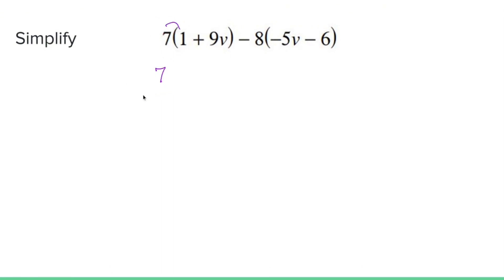So 7 times 1 is 7, 7 times 9v, positive 9v is 7 times 9, which is 63, and v comes along for the ride.